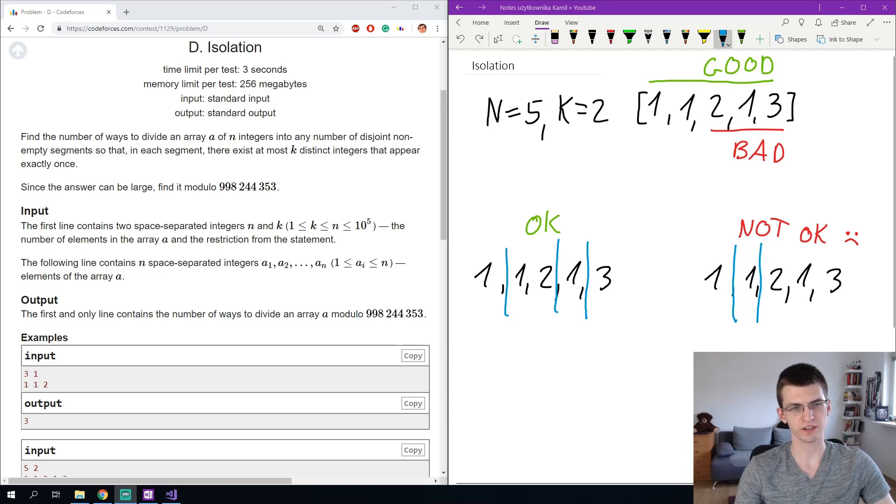We are given a sequence of n integers and we must find the number of ways to split this sequence into disjoint segments in such a way that each segment has at most k unique numbers. A unique number here means a number that appears exactly once in this segment.